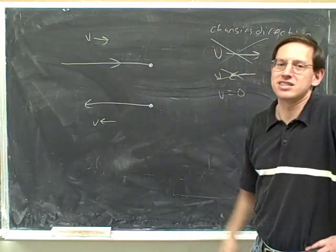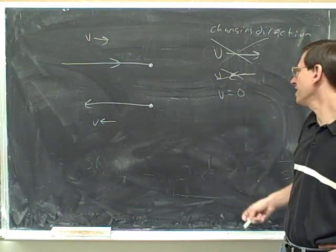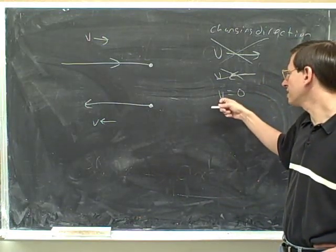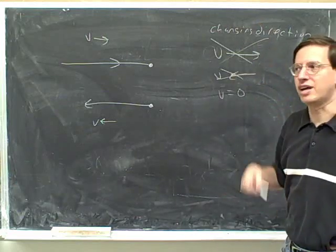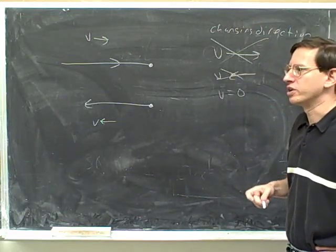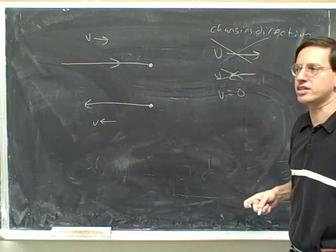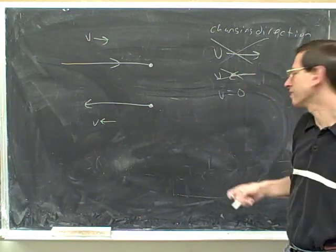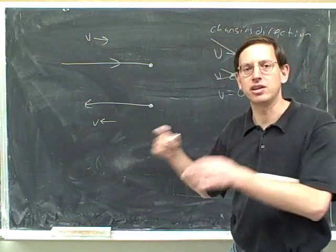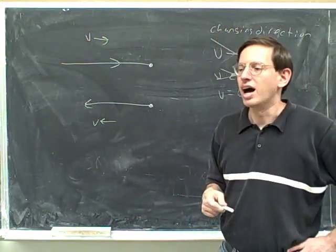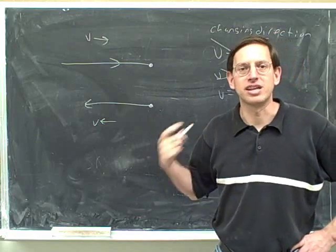The only other possibility is that the velocity is zero. If the velocity is not pointing right and it's not pointing left — we're doing one-dimensional motion — that can only be because the velocity is zero. Only a vector that doesn't have any length at all doesn't have to point in any direction. So here's another argument for why when you're changing direction, your velocity has to be zero. I hope that makes you feel more comfortable with the idea, but even if you're not, now is the time to memorize that fact: in the instant that you change your direction, your velocity in that instant is zero.